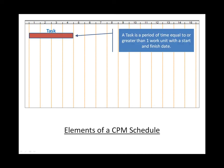Next there are tasks, also known as an activity. A task is a period of time equal to or greater than one work unit with both a start and finish date.